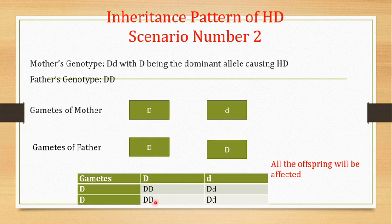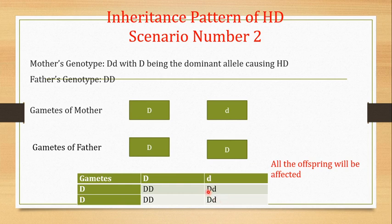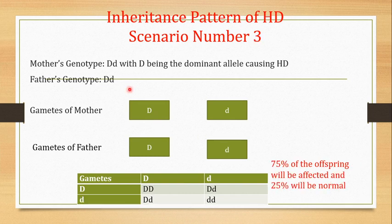When you cross them, two of the offspring will be homozygous for the dominant allele and two will be heterozygous with one dominant and one recessive allele. Since HD is autosomal dominant in nature, the presence of a single copy of the capital D allele will cause the disease. So in this scenario, all of the offspring will be affected.